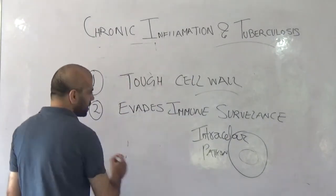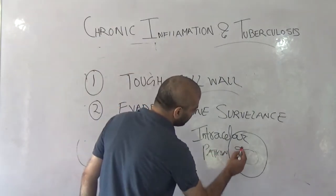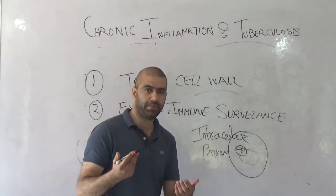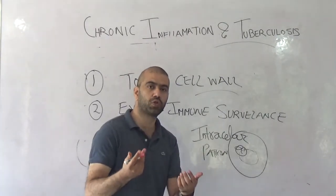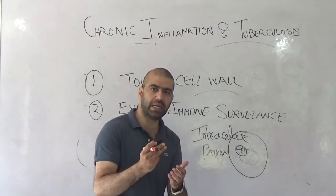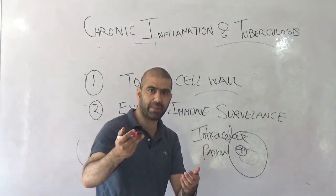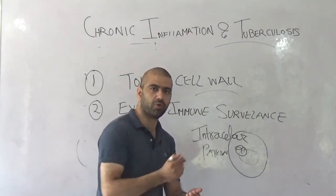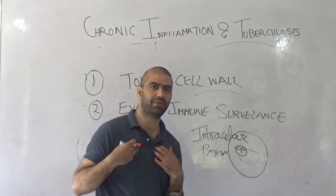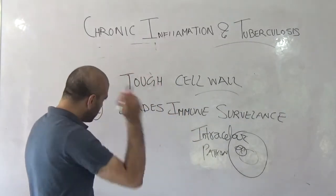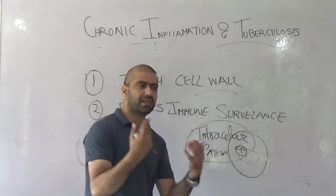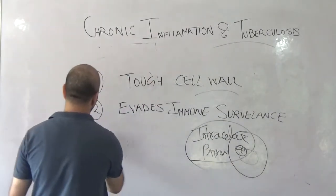This bacteria multiplies slowly — it takes around 24 hours to divide — which gives it an advantage against antibiotics, because as the antibiotic concentration decreases over time, the drug leaves the system but the bug remains. Being an intracellular pathogen, it evades immune surveillance effectively.